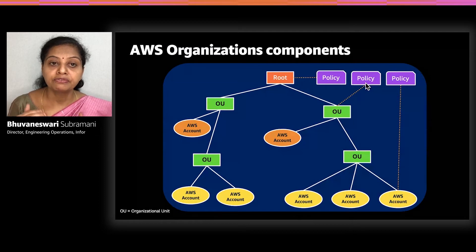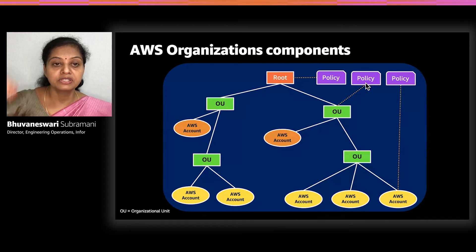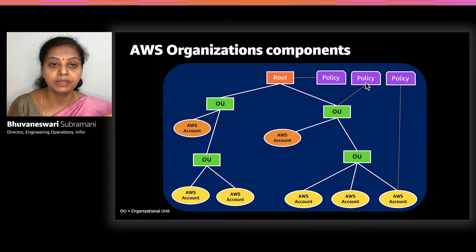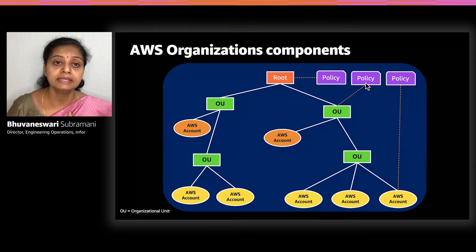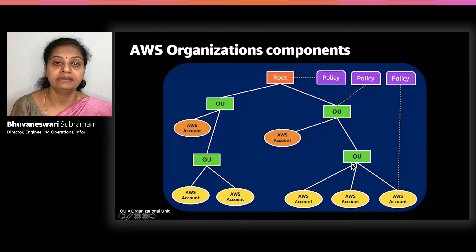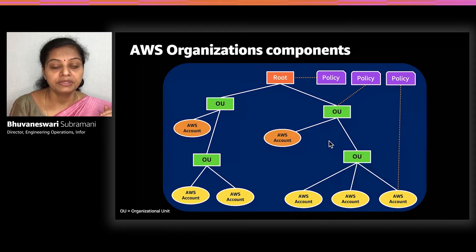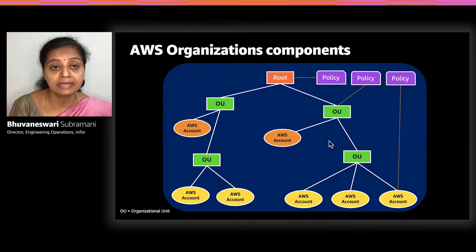Let's look at the components of an organization. When you create an AWS organization, imagine a tree held upside down, with a root at the top and branches coming down as organizational units, ending with leaves which are your AWS accounts. When you apply any policies at any level of the tree, they flow down and get applied all the way to the leaves. An account can be associated with only one AWS organization, and to form a hierarchy, you can have up to five levels of organizational units.